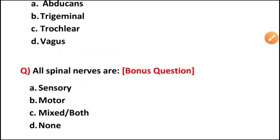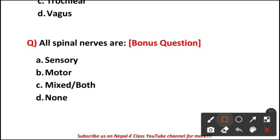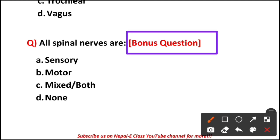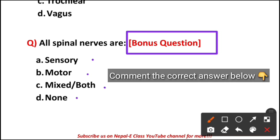Bonus question: are the spinal nerves — option A sensory, option B motor, option C mixed or both, or option D none? I hope you will comment the correct answer down in the comment section. That is the end of our video.